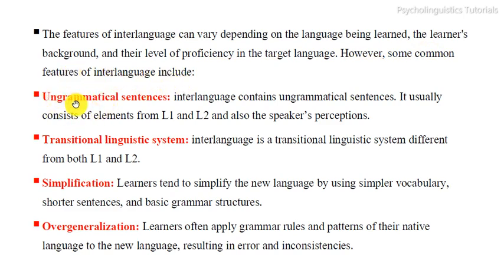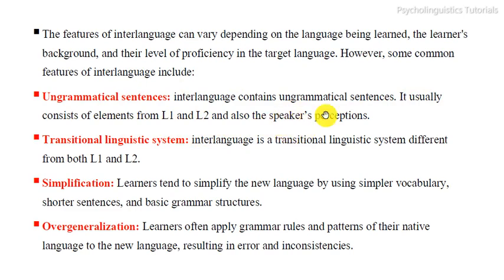First is ungrammatical sentences. Interlanguage contains ungrammatical sentences; it usually consists of elements from the first language, the second language or target language, and also the speaker's perception. Second is transitional linguistic system. Interlanguage is a transitional linguistic system, different from both L1 and L2.